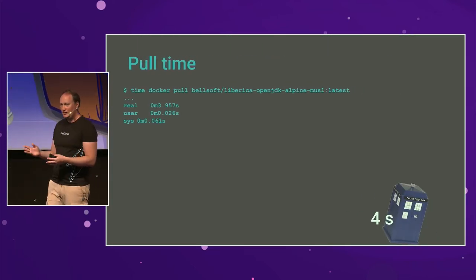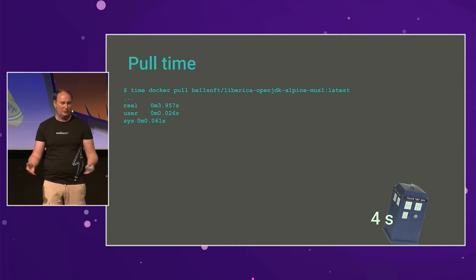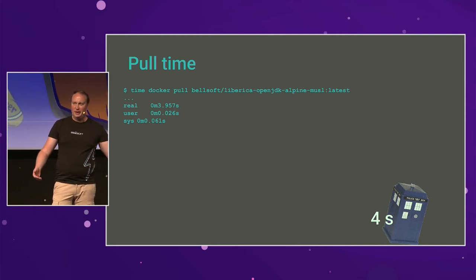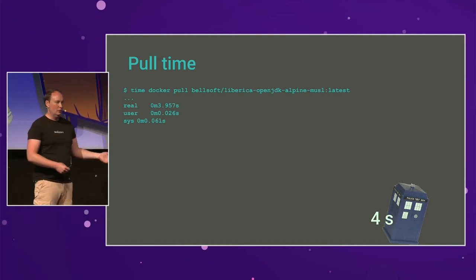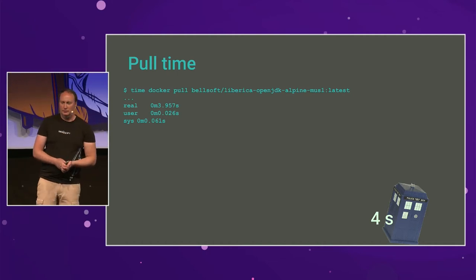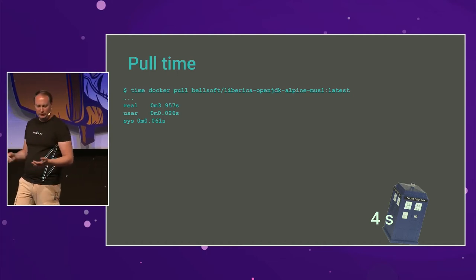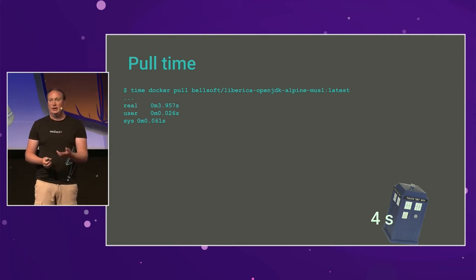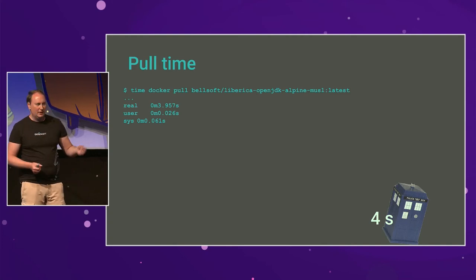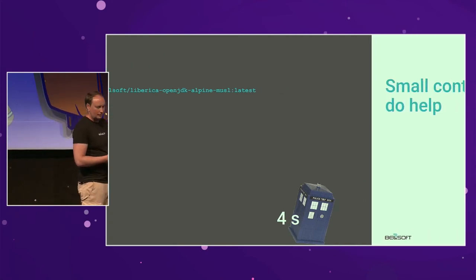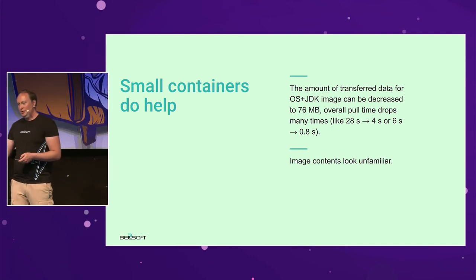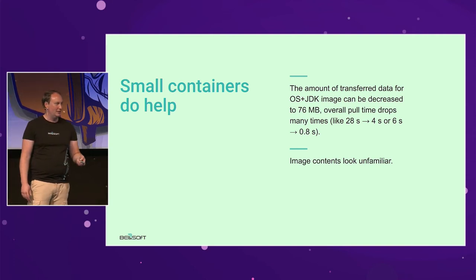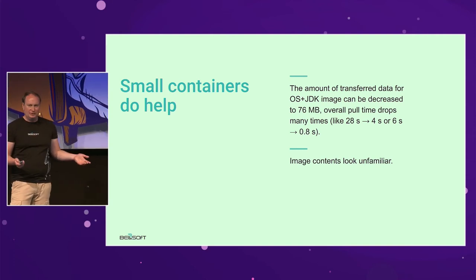Voila — in seconds we get a working Java environment from scratch, if you only had Docker. It can be a test container, a local experiment with some Java version, or a pull to your production on a clean pod. We spend only four seconds pulling. In public clouds it's half a second or a tenth of a second. Small containers help: we greatly reduce pull time, reduce disk usage and headache, and get rid of unknown components.